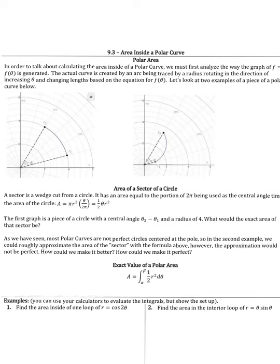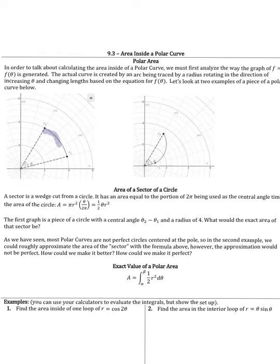9.3 is on area inside a polar curve. In order for us to talk about area inside a polar curve, we first have to think about the way that we actually create and utilize a graph in terms of theta. The actual curve that we are looking at is created by using r and theta. This arc here is created by rotating our r length at theta degrees, and we could call this delta theta, or theta 2 minus theta 1. We generate this piece of arc by rotating r around some angle delta theta.